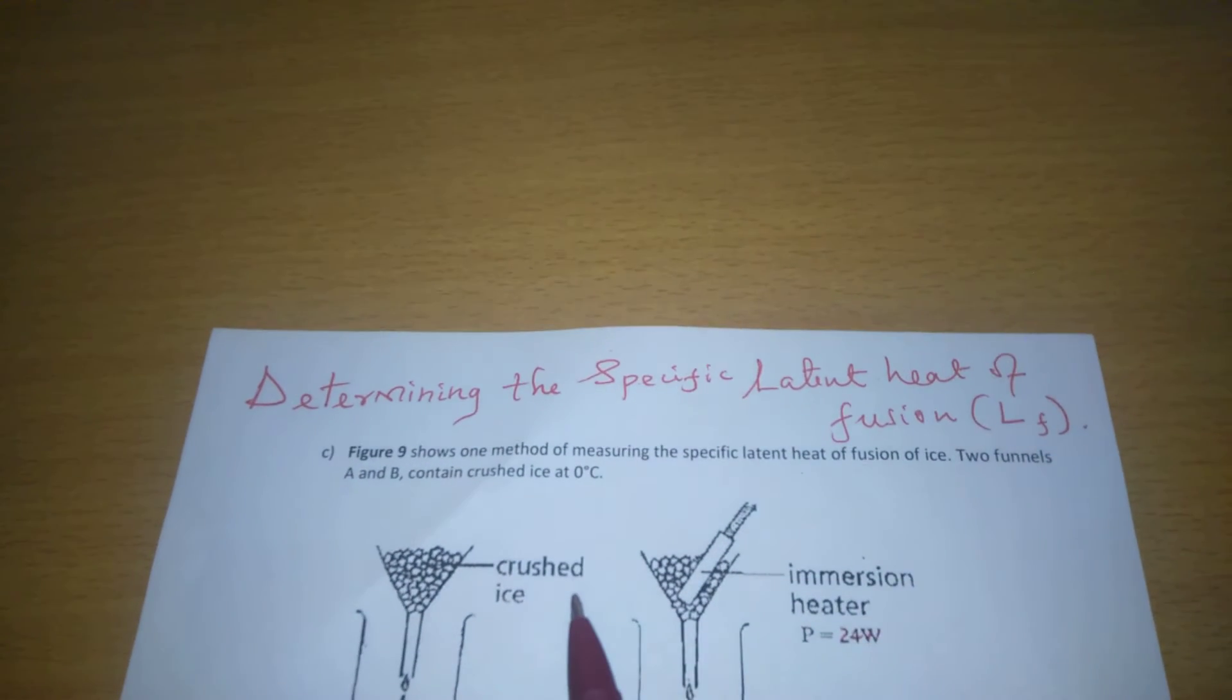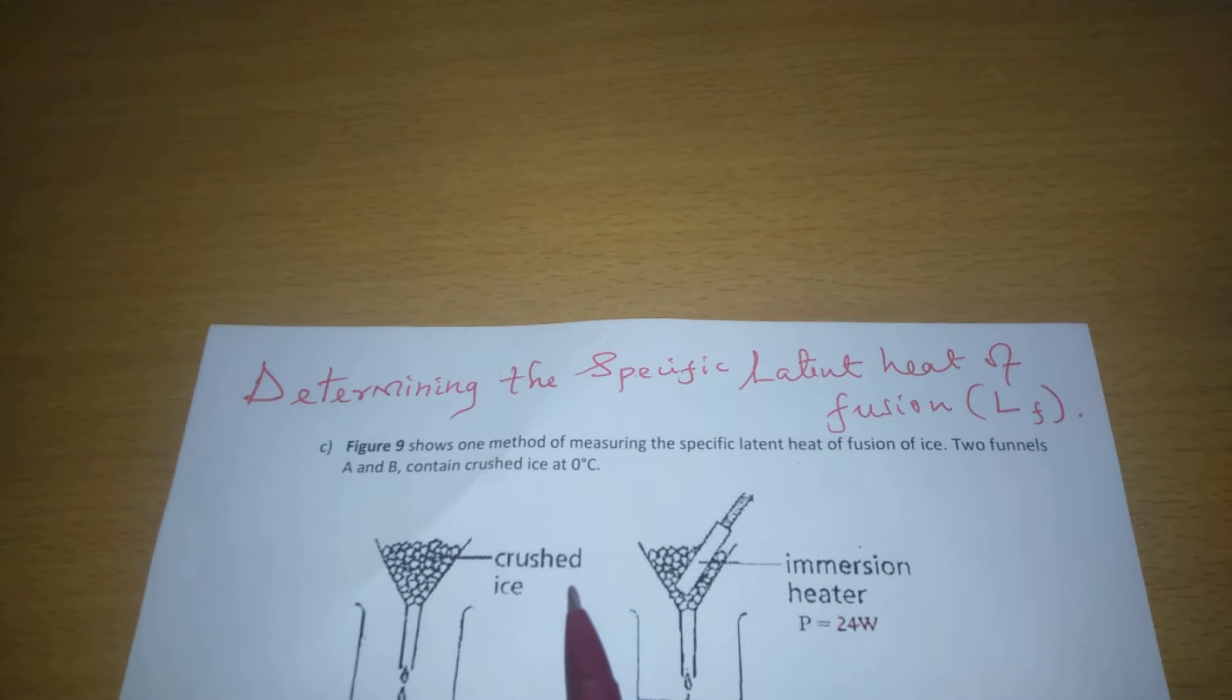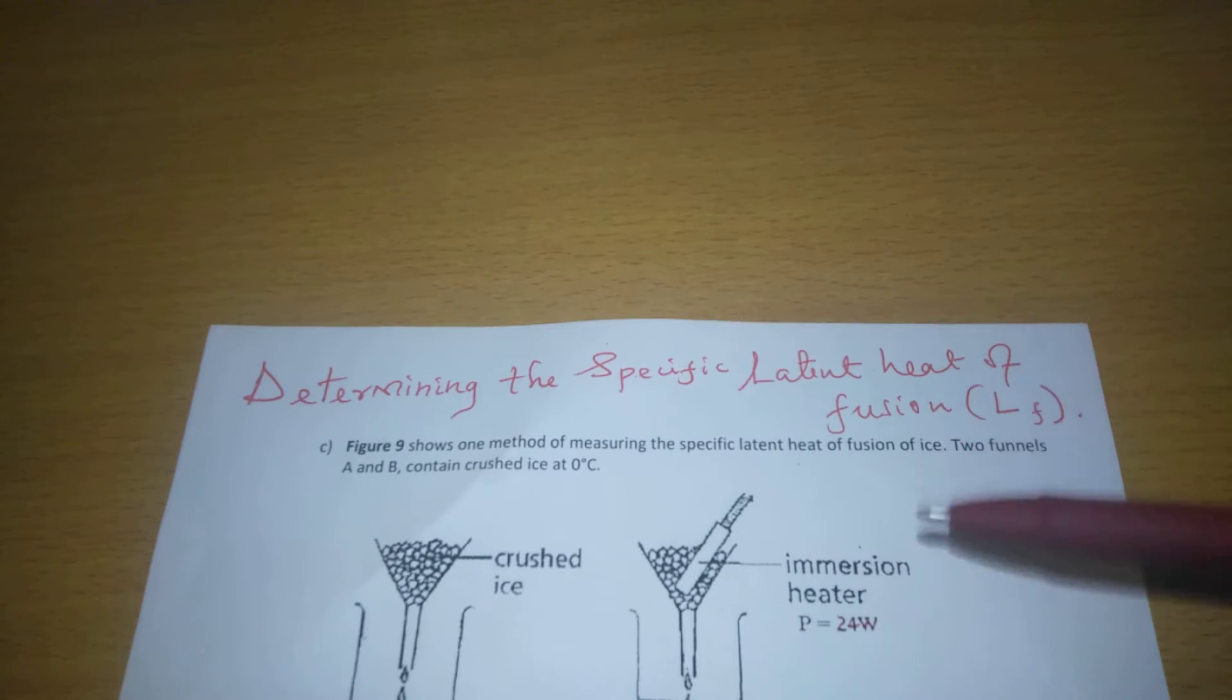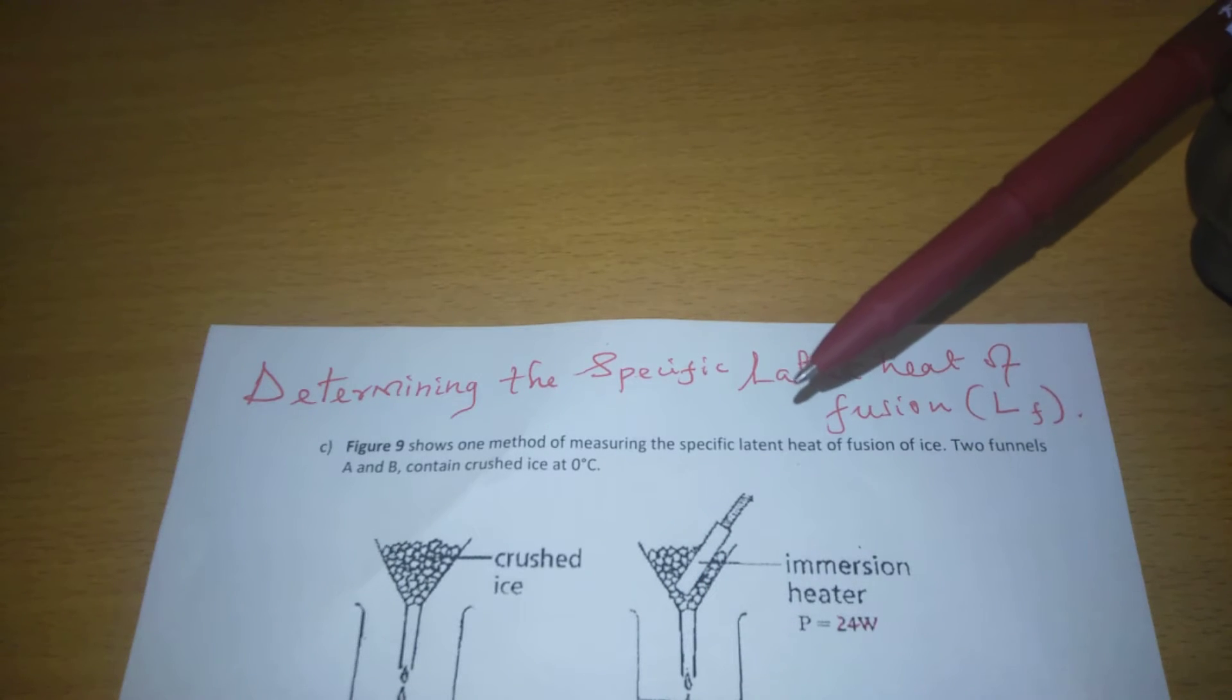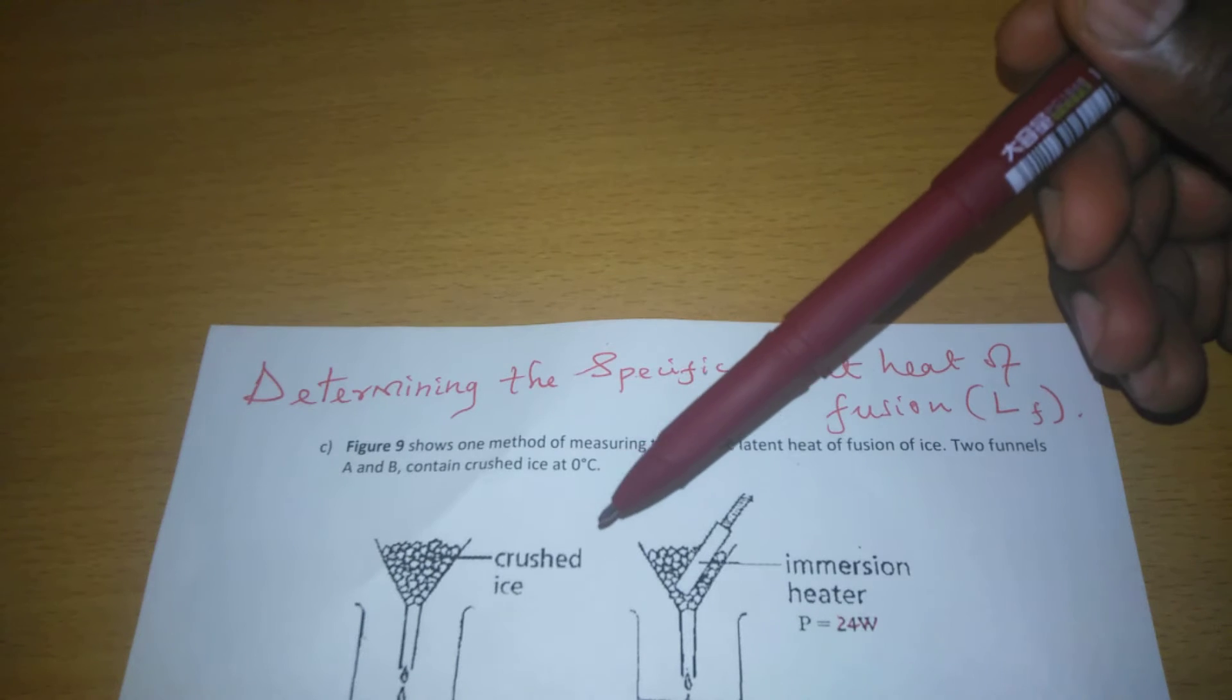We're going to look at the determination of specific latent heat of fusion, which is the amount of energy required to change a unit mass of a substance from solid state to liquid state at a constant temperature, or without changing temperature. We're going to look at an experiment performed to determine the specific latent heat of fusion of crushed ice.